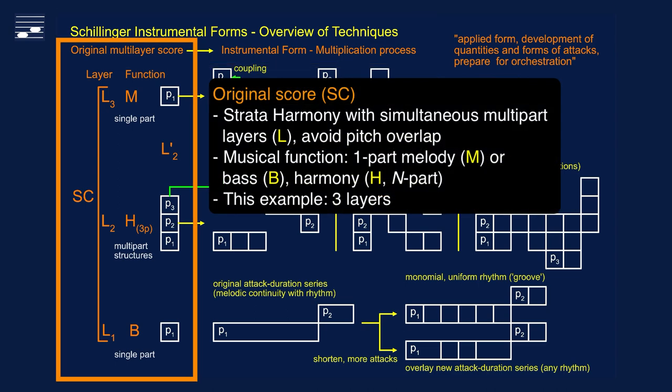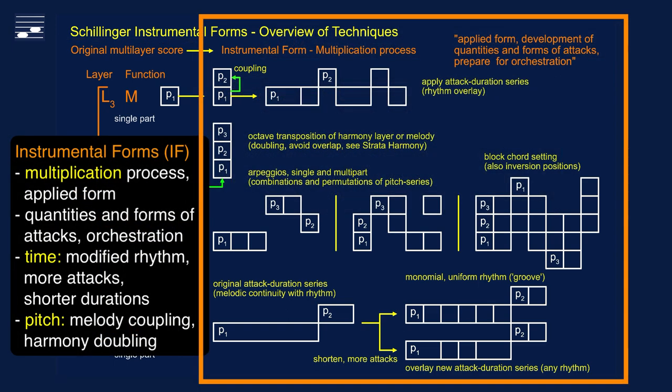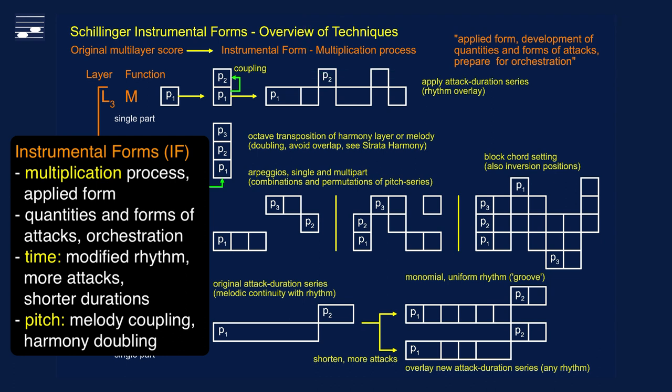A multiplication process is applied to a source score, shown here as a three-layer strata harmony example. Single part layers have melody or bass function and there are multi-part harmony layers. Various multiplication options are shown on the right. This applied form develops or modifies the quantities and forms of attacks and is related to orchestration.